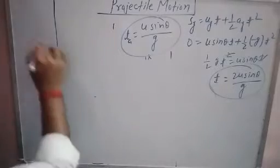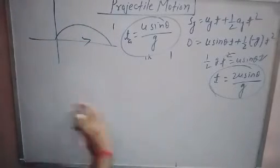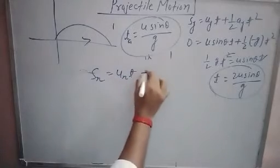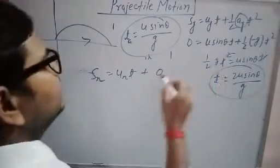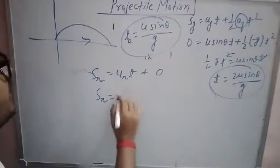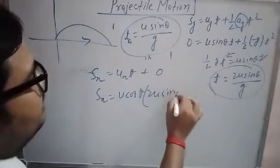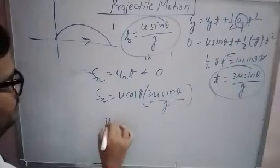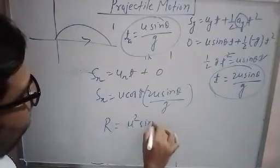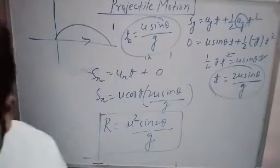To calculate the range of the projectile — that is, how far it moves in the horizontal direction — we use the equation along the x-axis: s_x = u_x · t. The time used is the total time of flight, 2u sin theta / g. This gives the result called the range: R = u² sin 2theta / g. This is the range of a projectile projected from the ground.